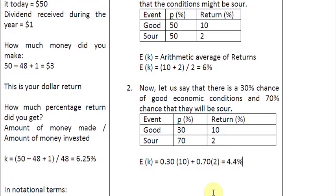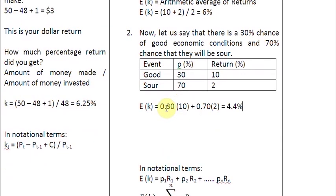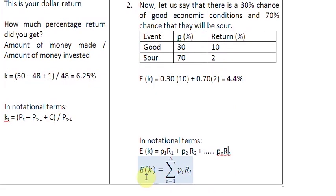And if you want to write the same result in notational terms, then you will observe that this 0.30 is P1, probability 1. This 10% is R1. This 0.70 is probability 2. And this 2 is the return of the second possibility. Now, like this, this series can go on till n number of terms so that your last term will be Pn times Rn. And if you want to summarize it by a summation mark, you simply write summation of all outcomes varying from i to n, Pi times Ri.